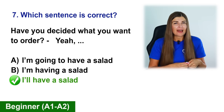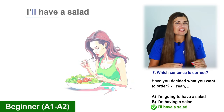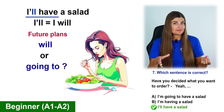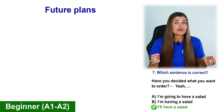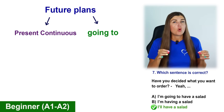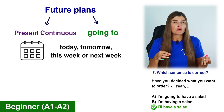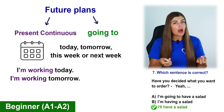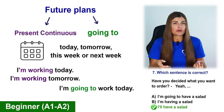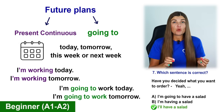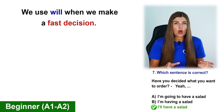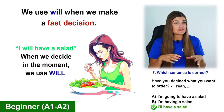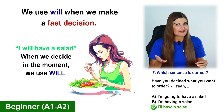The correct option is C: I'll have a salad. I'll is a contracted form of I will. When do we use will and when do we use going to? When we talk about future plans, we use present continuous or going to — for today, tomorrow, this week, or next week. For example: I'm working today. I'm going to work tomorrow. We use will when we make a fast decision — when we decide in the moment. I decided right in the moment what I want to eat, so I'll have a salad is the correct option.